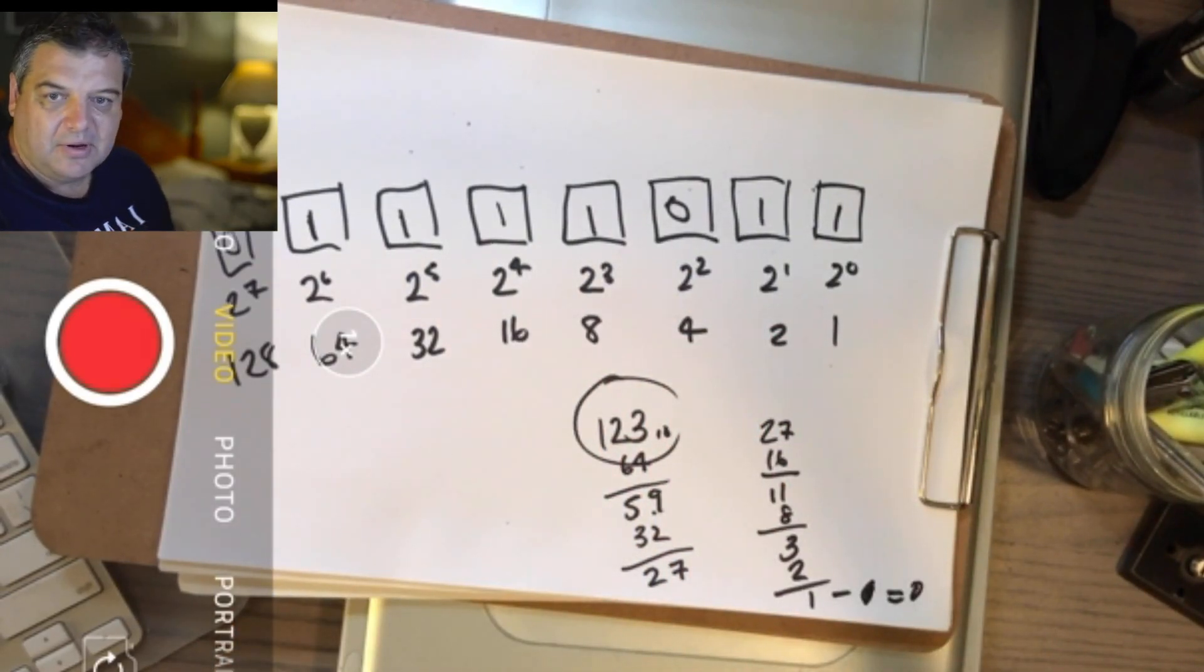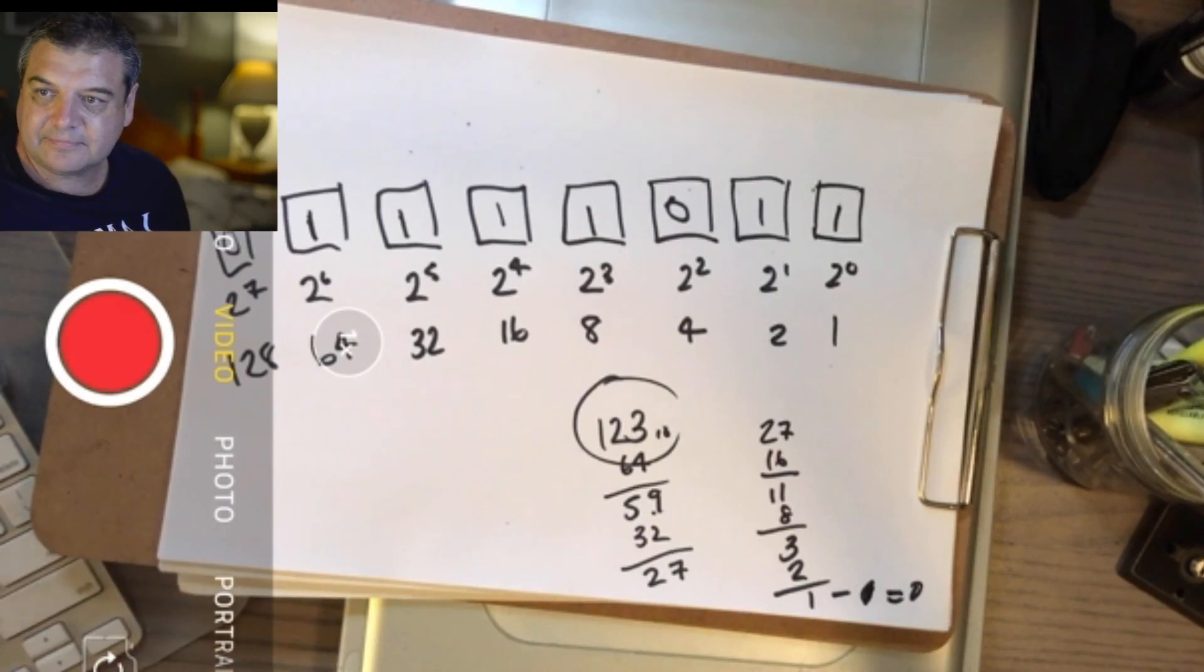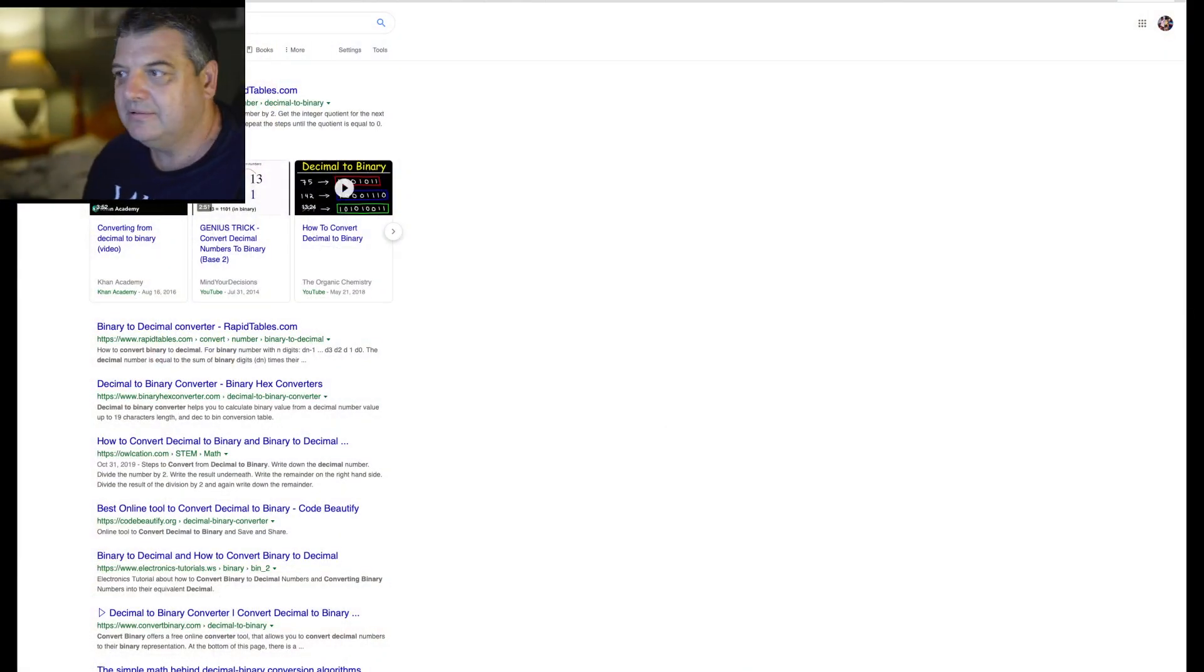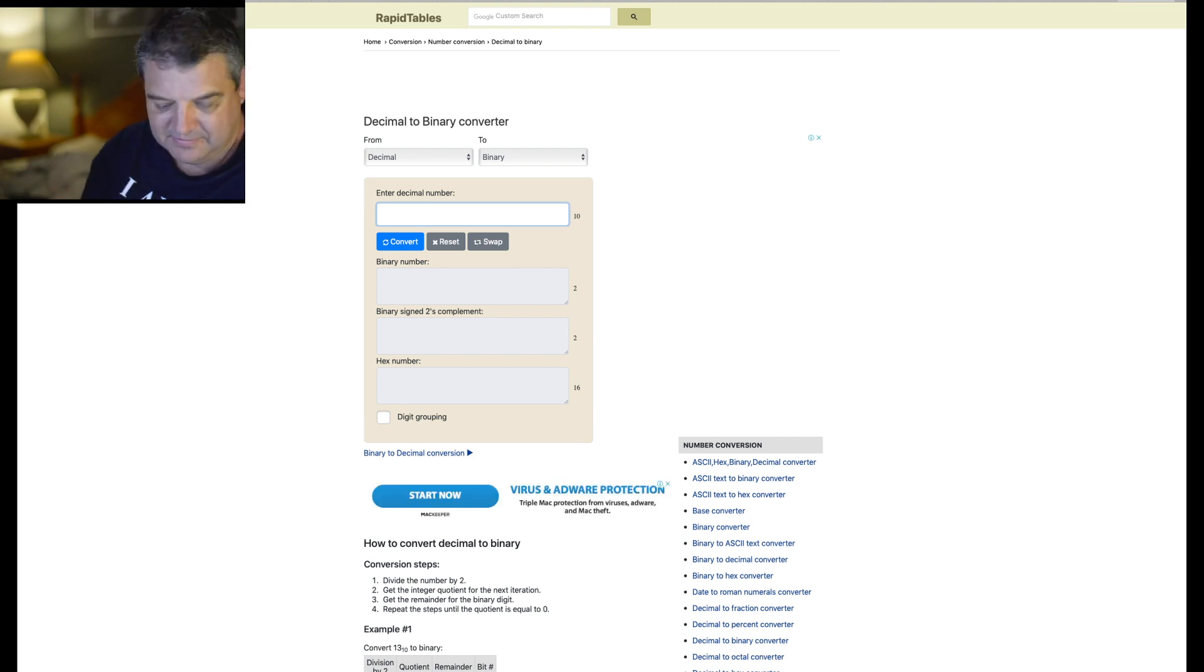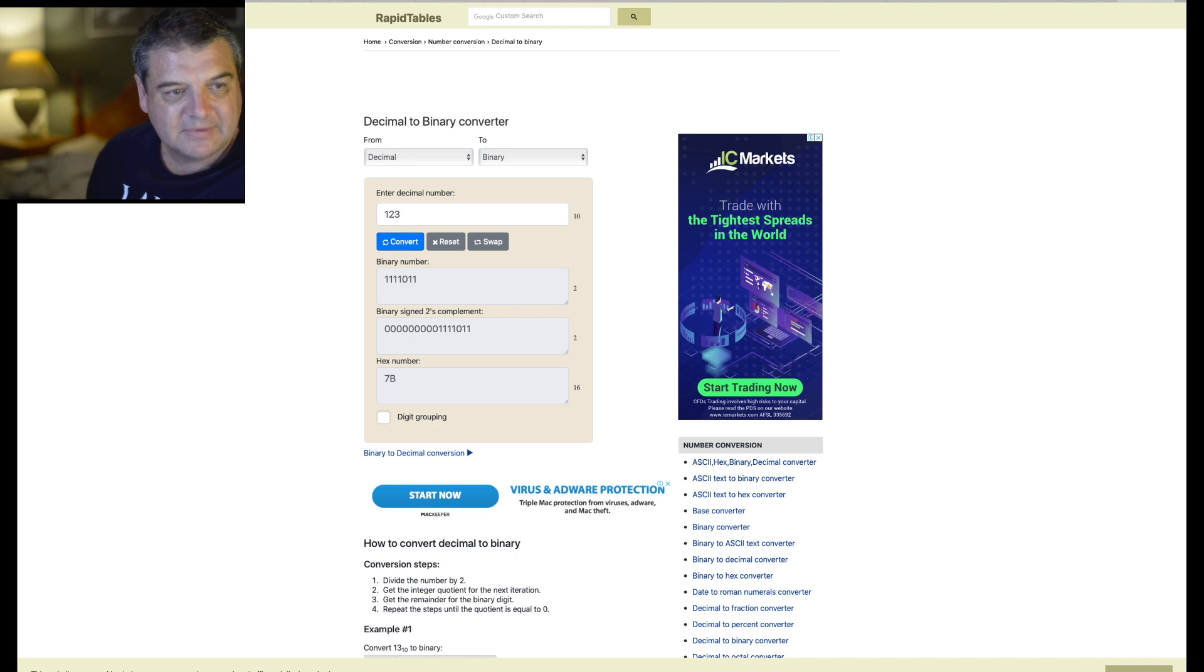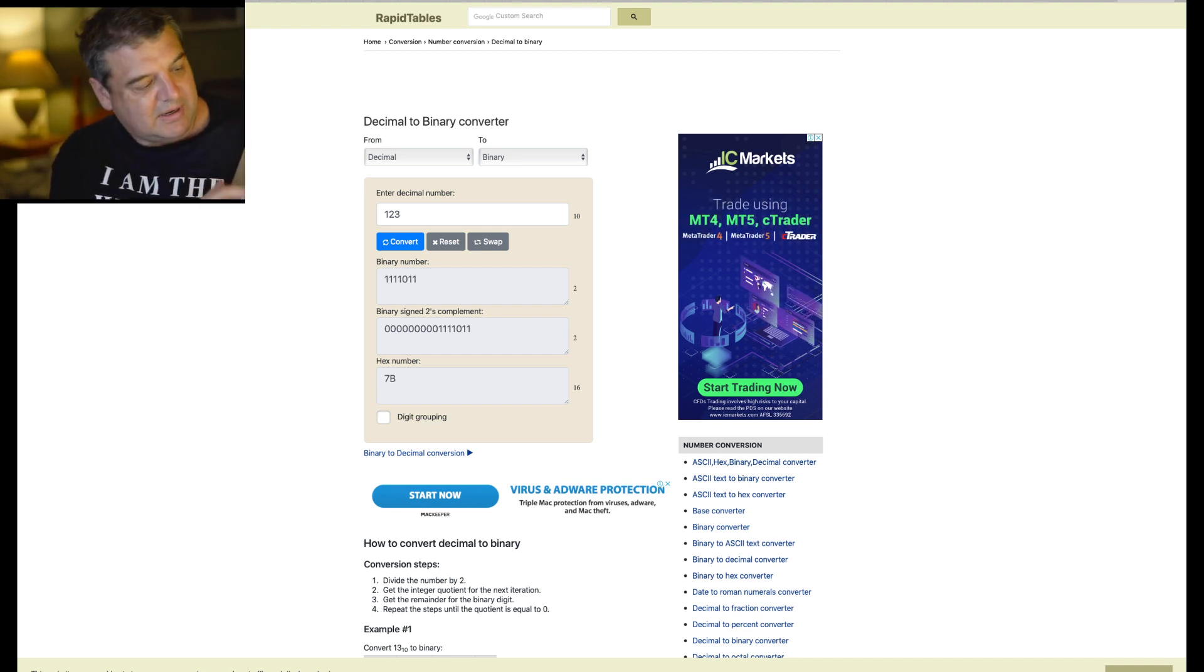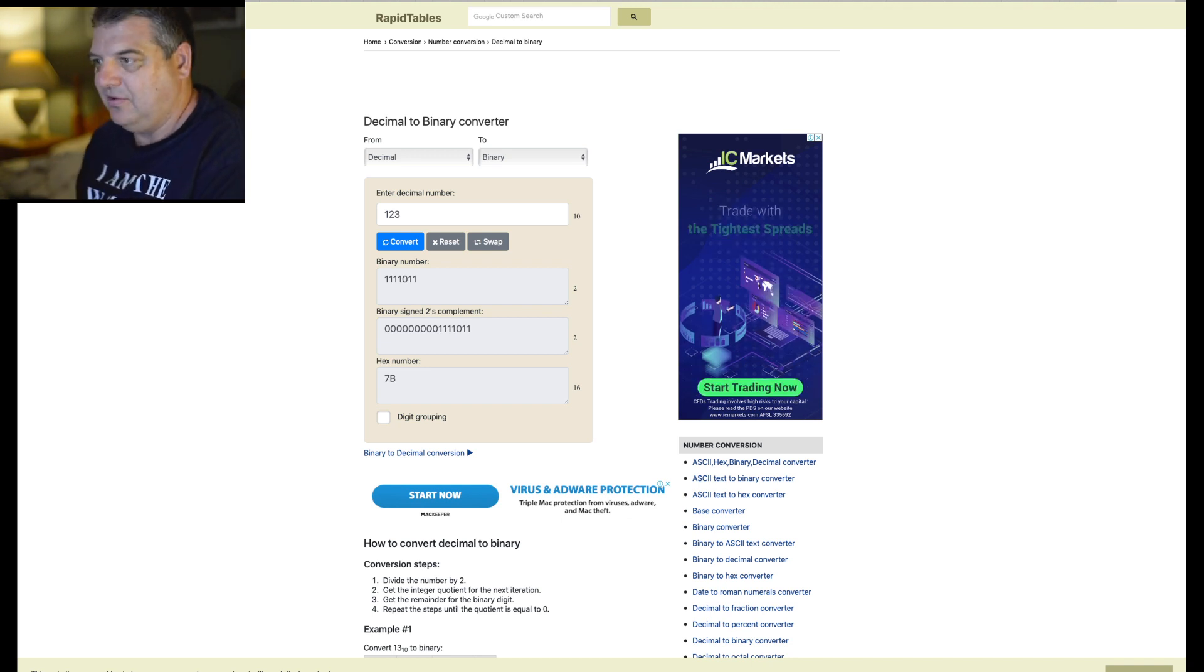Let's put decimal to binary converter, and I'll show you this in Safari. Rapid tables. Let's open it and plug it straight in. Enter decimal number, 123, convert to binary. Let me show you the result there. It's the same. 1111011. And there we go, guys. That is how you convert from binary to decimal, and decimal back to binary again. It's as simple as that.